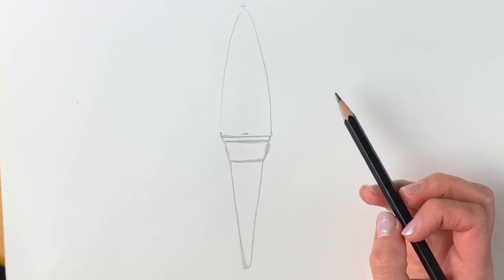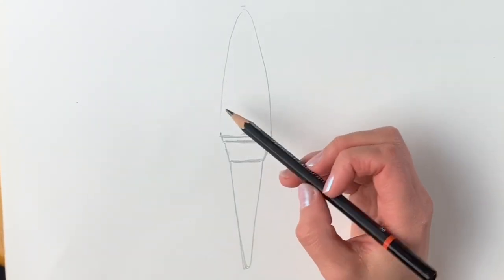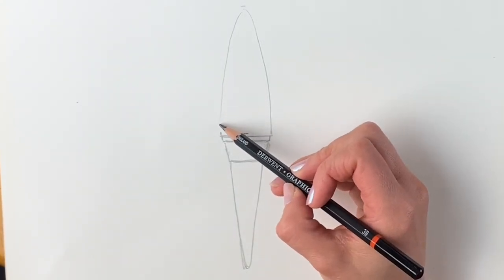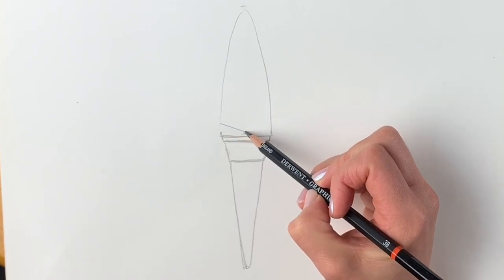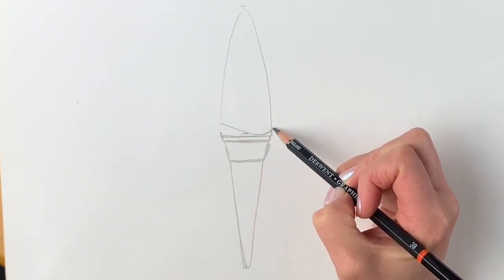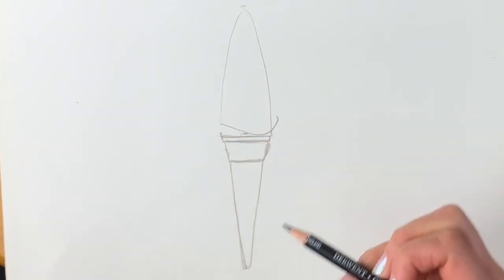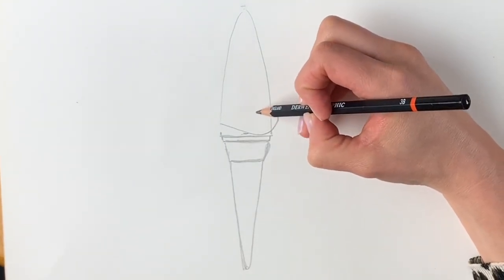We're going to have a nice big dollop of ice cream which is going to come down here and round, and then it's going to come up.